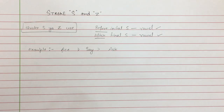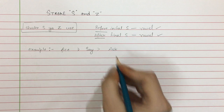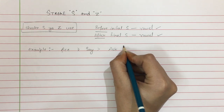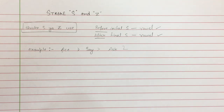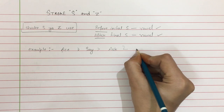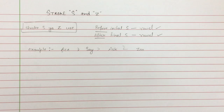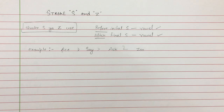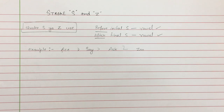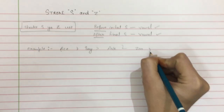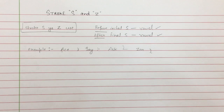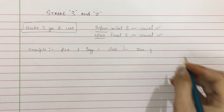Word लिखना है 'ask' — इसमें भी S से पहले vowel है, so आपको stroke use करना है, above the line। इस तरह से। और देख लेते हैं — 'zoo', similar case with the Z। Z के case में भी यही ध्यान रखना है। Stroke S या Z के लिए — जब भी initial S या Z, और final S या Z से पहले vowel occurrence होगी, आपको stroke use करना है। Zoo इस तरह से लिखेंगे, और word लिखना है 'busy'।